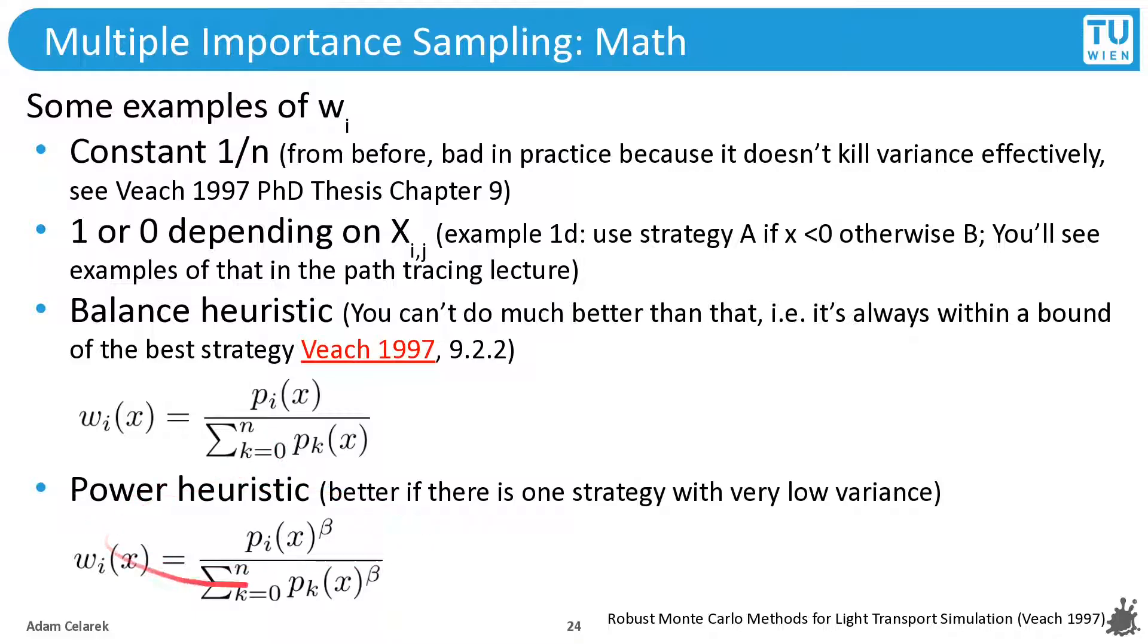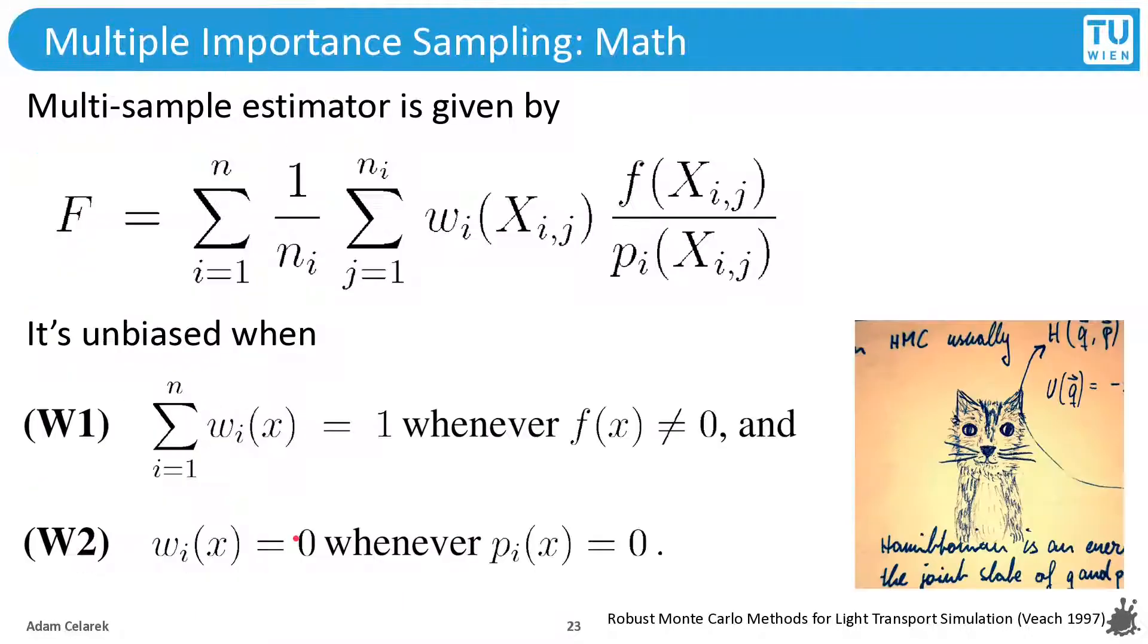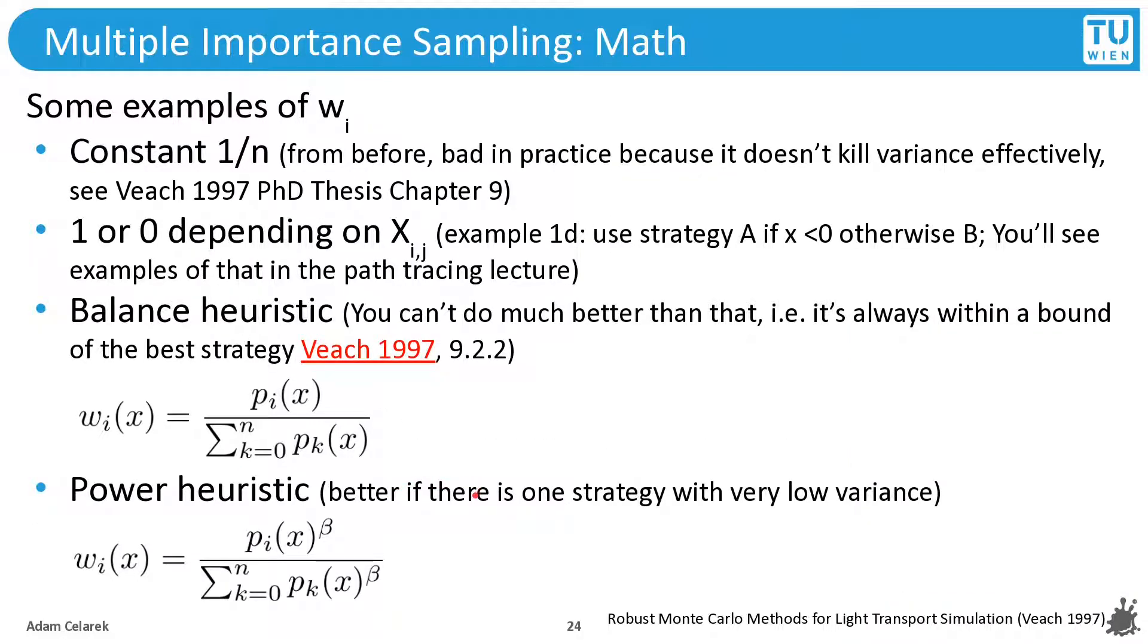And next, the power heuristic. It is better if there is one strategy which produces low variance. And similar to this thing on top, it also observes these conditions.